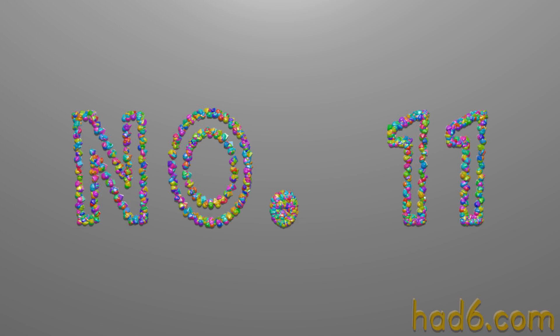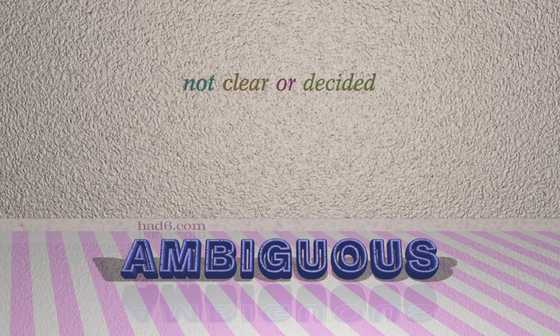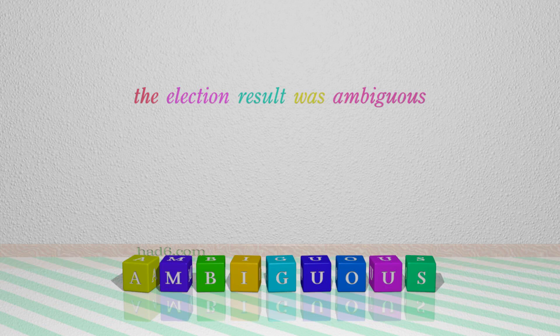Number 11: Ambiguous, which means not clear or decided. For example: The election result was ambiguous.